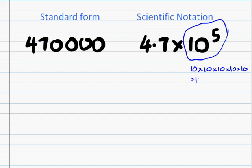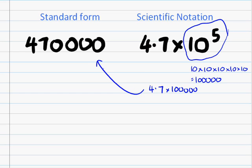Which equals 1 with 1, 2, 3, 4, 5 zeros after it. So this is just another way of writing 4.7 times 100,000, which is 470,000.